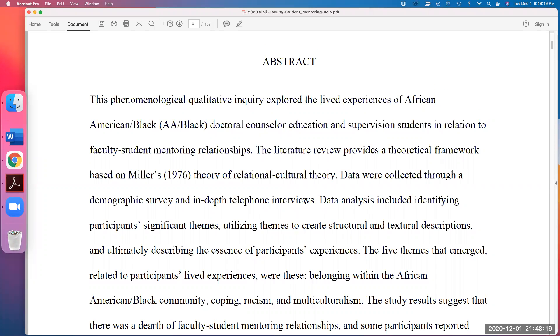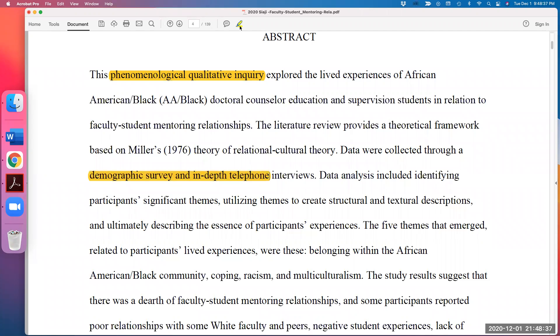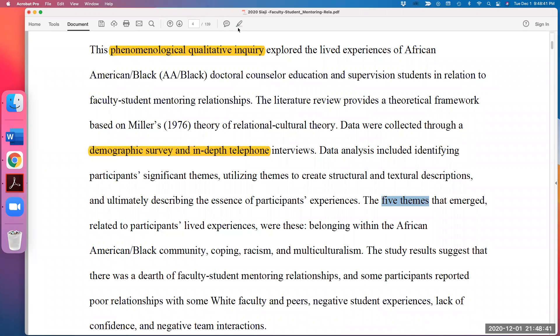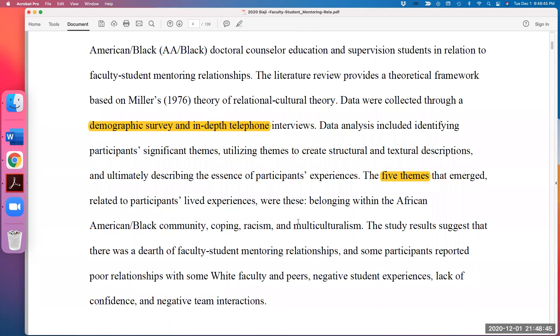Abstract also is one way to take a look. So it says the phenomenology qualitative study that examines the lived experience of African-American doctoral students and then data were collected here from a survey and the in-depth telephone interview. You can see here then the five themes were generated out of that interviews.